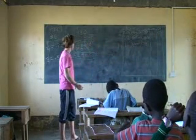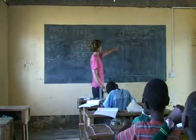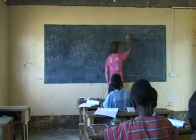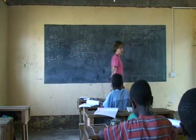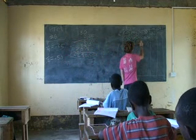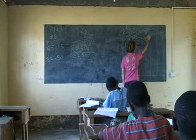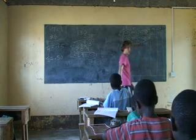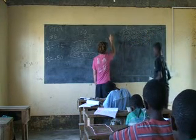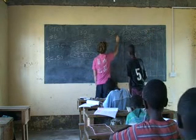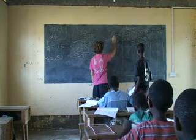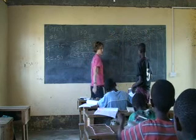Then we look at the tomatoes. We multiply how much we're getting by how much it costs per unit, which is 30 shillings. So 30 times 0.5: 5 times 0 is 0, 5 times 3 is...